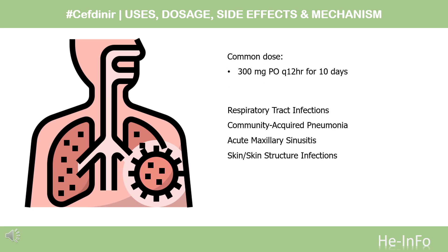Dose: The dose of this medicine will be different for different patients. Community-acquired pneumonia caused by Haemophilus influenzae including beta-lactamase-producing strains, Haemophilus parainfluenzae including beta-lactamase-producing strains, Streptococcus pneumoniae penicillin-susceptible strains only, or Moraxella catarrhalis including beta-lactamase-producing strains: 300 mg PO Q12HR for 10 days.